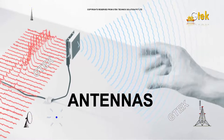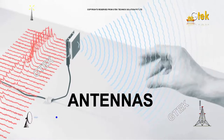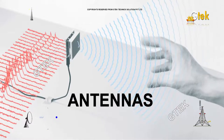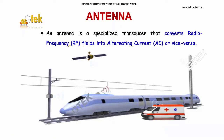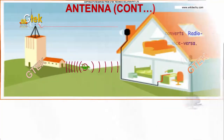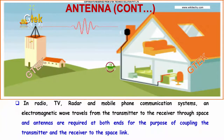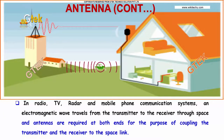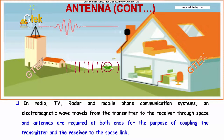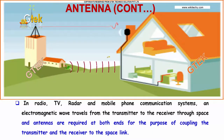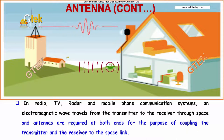Here are the antennas — this is interesting. An antenna is a specialized transducer that converts radio frequency fields into alternating current and vice versa. In radio, TV, radar, and mobile phone communication systems, electromagnetic waves travel through the transmitter to the receiver through space and antennas, which are required at both ends.